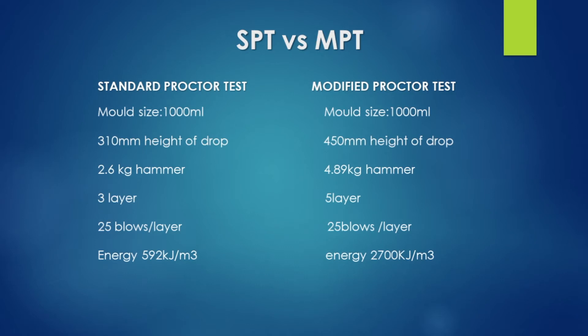The energy formula uses the number of layers, the weight of the hammer, the height of drop, multiplied by the number of blows, divided by the volume of the mold. That gives the energy level. This is the standard and modified compaction test comparison.